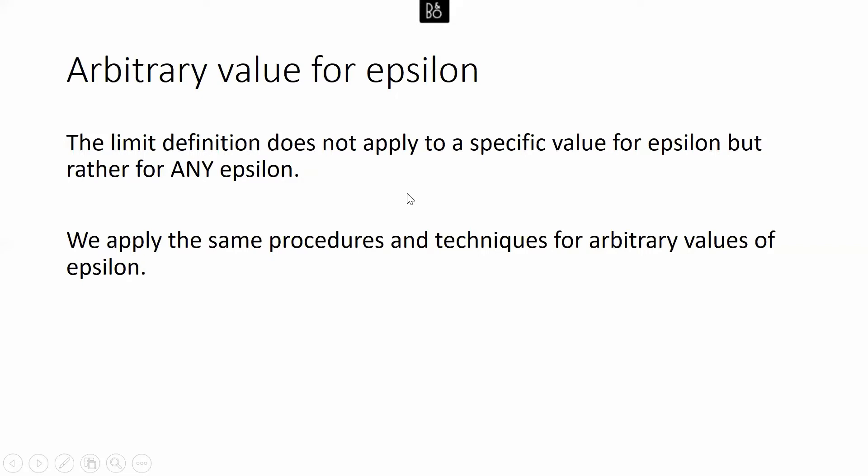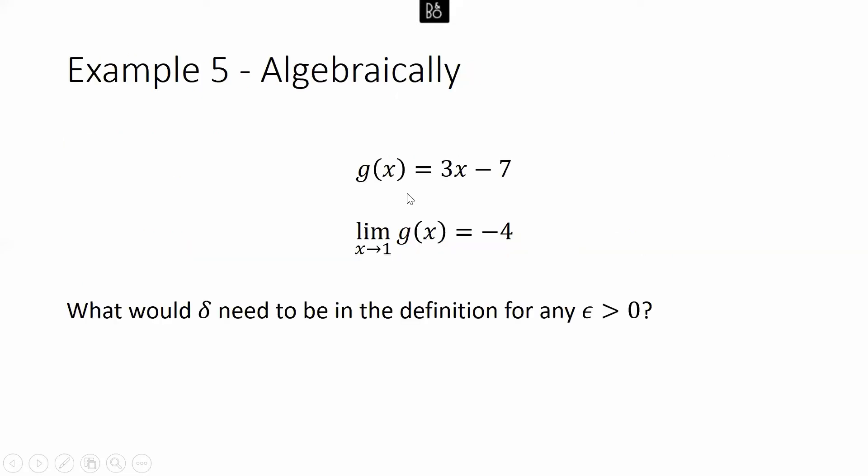Let's look at an example we've already seen with epsilon equal to 0.1 and 0.01. We have g(x) = 3x − 7, and we know that the limit of g(x) as x approaches 1 is negative 4.